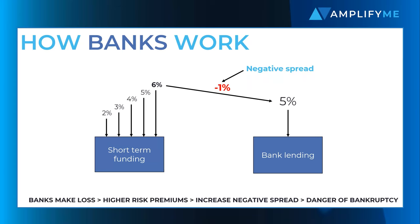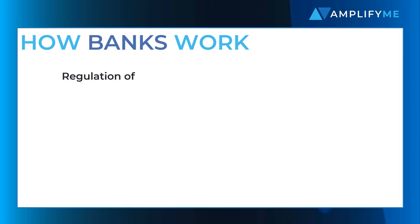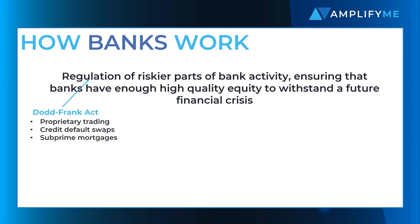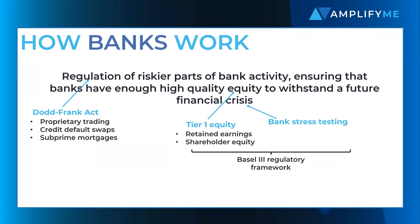As banks move from profit to loss, providers of capital start to charge higher risk premiums, compounding negative spreads and bank losses. This was one of the primary causes of the 2008 financial crisis. Following the crisis, a series of important regulations were implemented across the banking industry, regulating the riskier parts of bank activity and ensuring banks hold enough high-quality equity to withstand a future financial crisis. Banks are better regulated and better capitalized than before the great financial crisis, however significant adverse conditions could still compromise a bank's core business model.